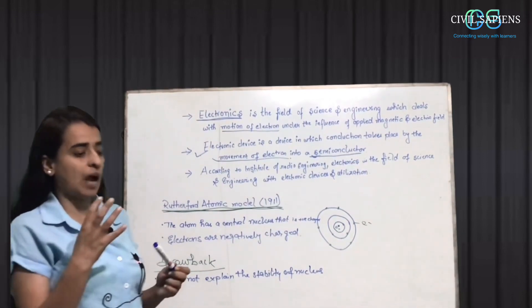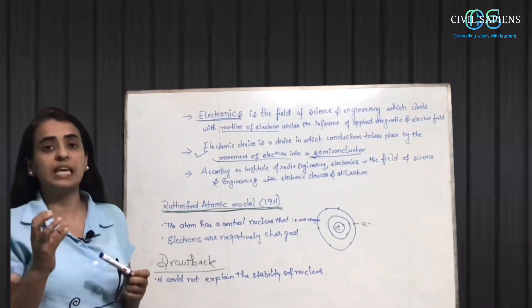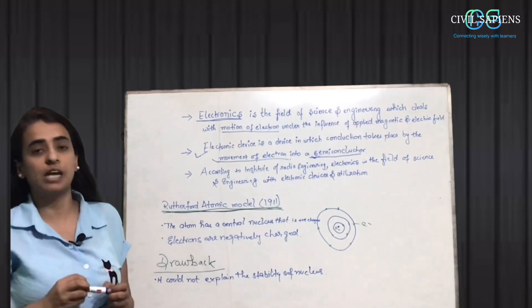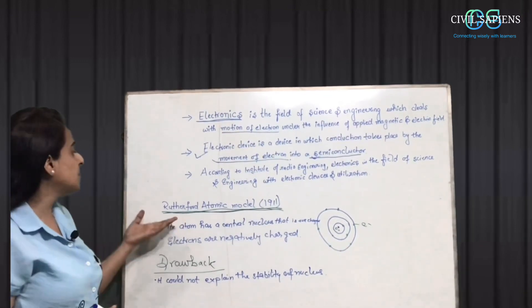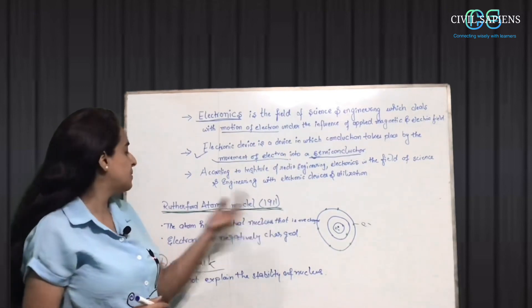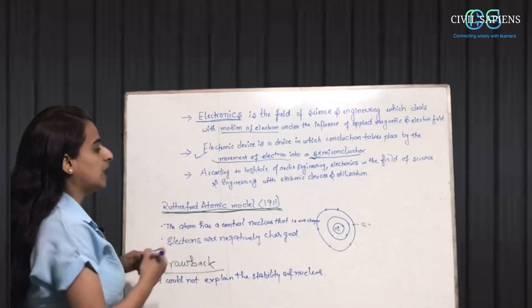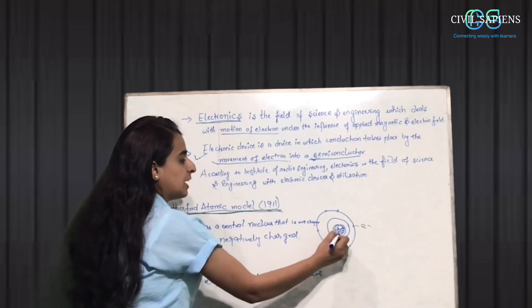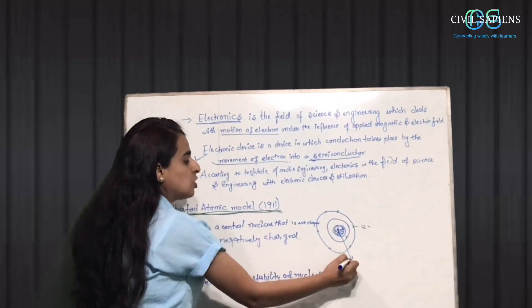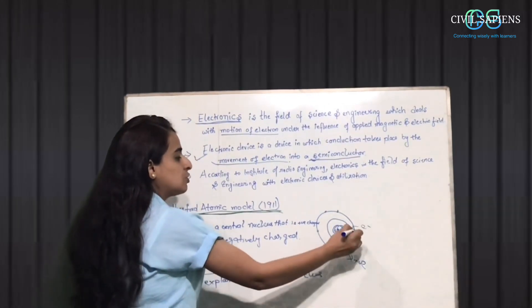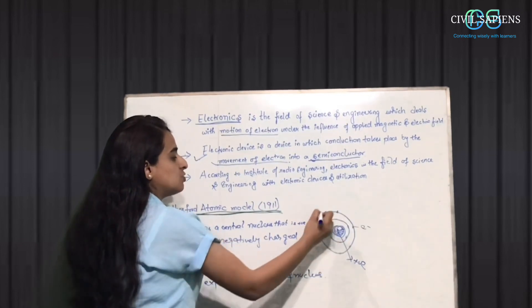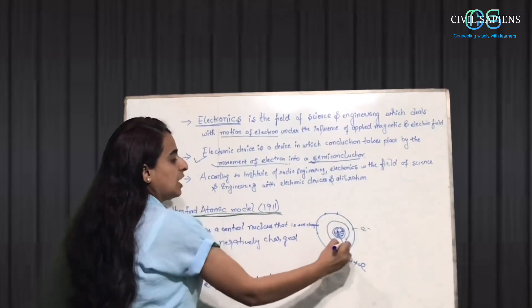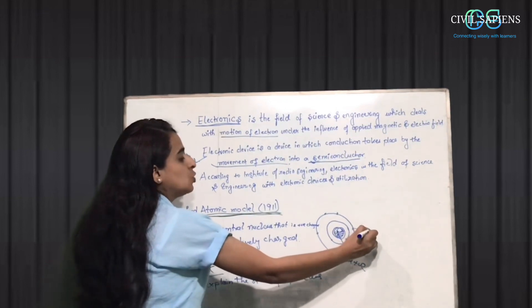When you are talking about elements, the basic elements are atoms. Rutherford has given an atomic model in 1911. It was said that the atom has a central part. We call the central part the nucleus. The nucleus has a proton that is positively charged, and the electrons are negatively charged.